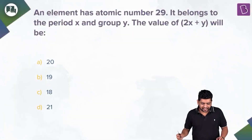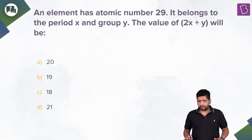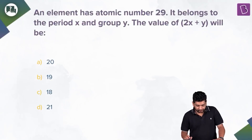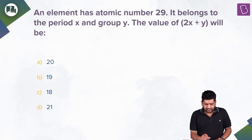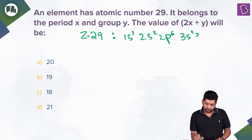This question says an element has atomic number 29 — we know it is copper. It belongs to period x and group y, and we need the value of 2x + y. The electronic configuration should be 1s² 2s² 2p⁶ 3s² 3p⁶ 4s² 3d⁹ normally, but it becomes 4s¹ 3d¹⁰.